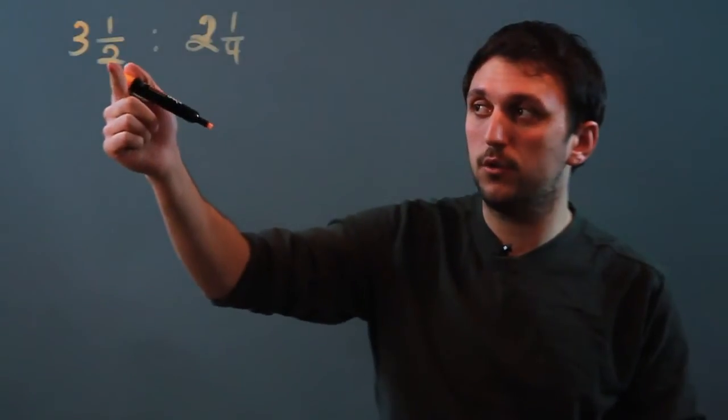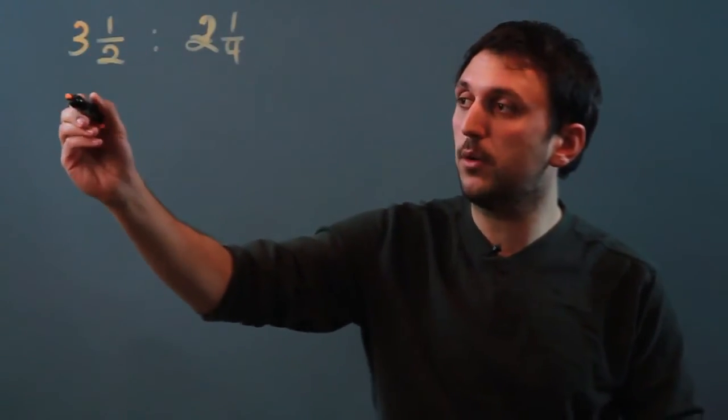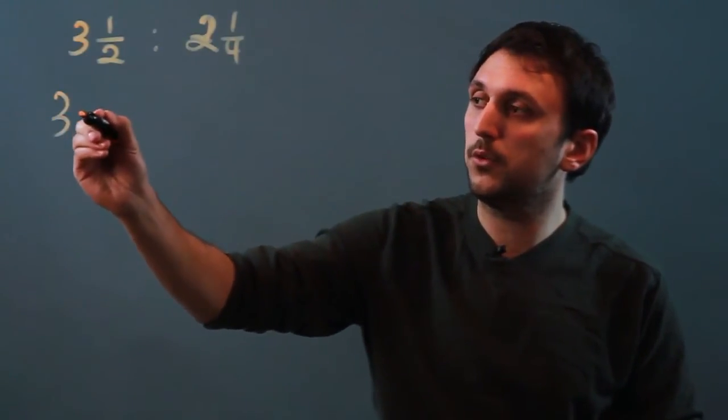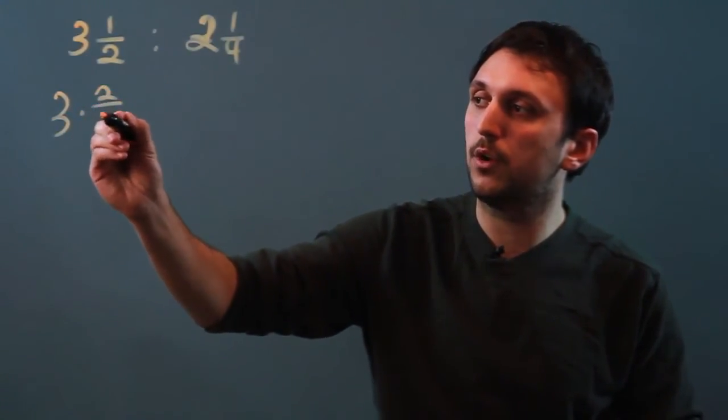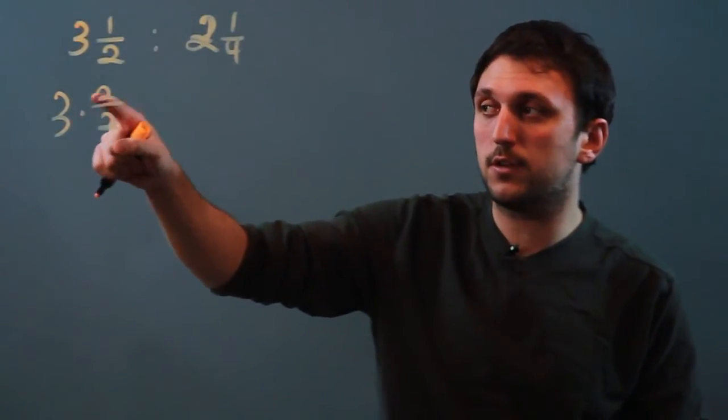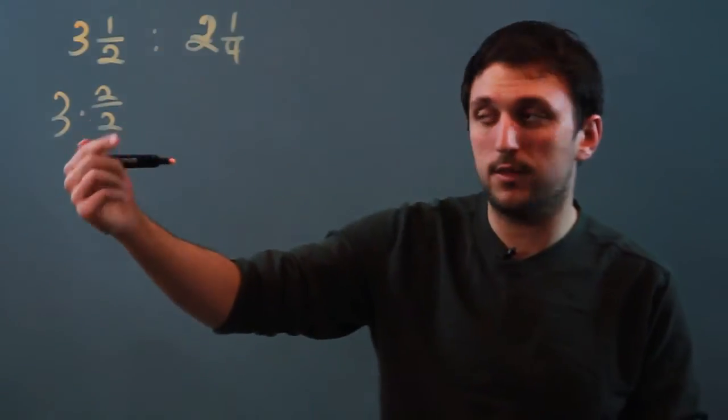To change this one to a proper fraction we want everything over two. So we'll take three and we'll multiply it by two over two which is really just one, so this is called rationalizing. We change it to the number we want without changing the value.